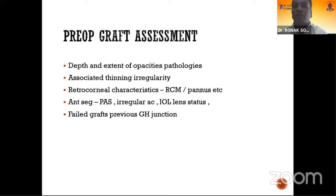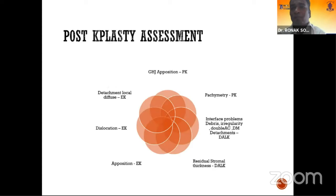In pre-op graft assessment, you evaluate depth and extent of opacities, thinning, retrocorneal membranes, pannus, anterior segment abnormalities, and failed grafts. In post-keratoplasty, you can check for graft-host opposition, pachymetry, interface problems, residual thickness, and in endothelial keratoplasty you can look for detachments, dislocations, and opposition of the graft.